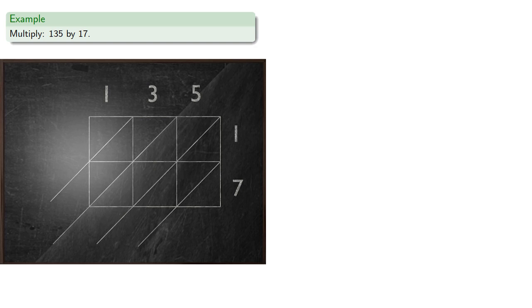Now, we'll multiply each of the digits of the multiplicand by the digits of the multiplicator. So we'd multiply 1 by 1, then record the product in the cell. Since the product is a one-digit number, that product will be written below the diagonal.